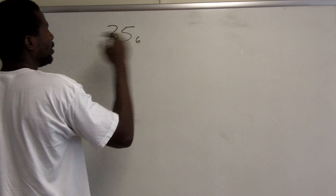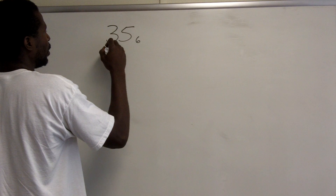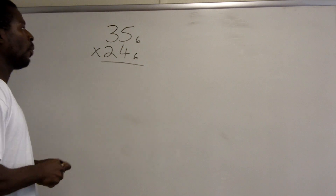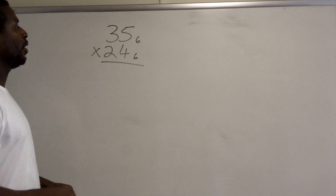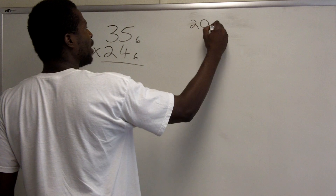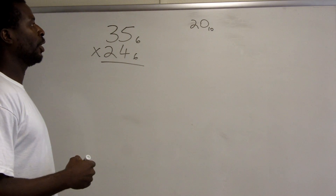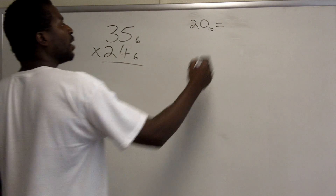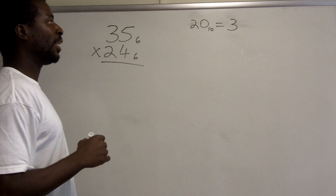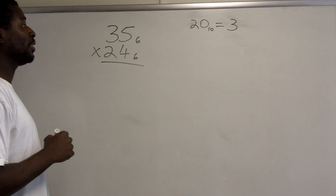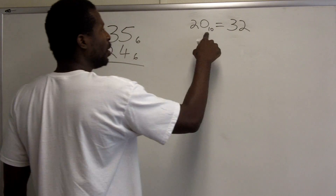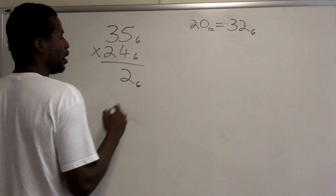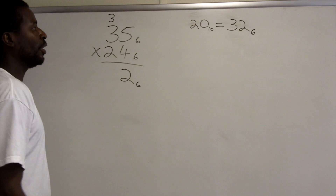For instance, if I wanted to multiply 35 base 6 by 24 base 6, when I multiply 4 by 5, that gives 20 — but that 20 is a base 10 number which I have to convert to base 6. How many groups of 6 are in 20? There are exactly three groups of 6, giving 18, with a remainder of 2. So 20 base 10 is 32 base 6. I record the 2 and carry the 3.